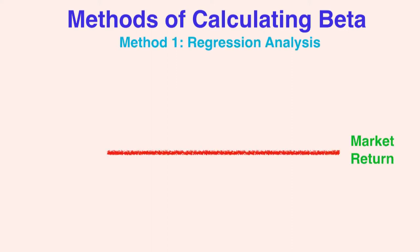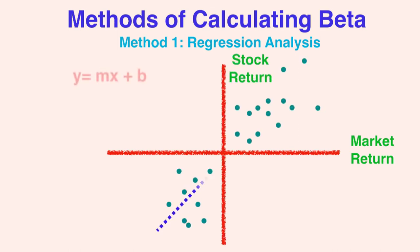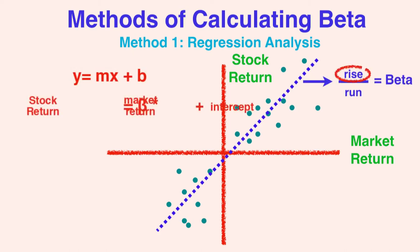There are two ways of calculating the beta of a stock, and both will give you the same result. One method is to perform a regression analysis. By plotting the market return on the x-axis and the stock return on the y-axis, you can find the slope of the line of best fit, which is the beta of the stock. In this sense, the beta, or the slope, is telling us how much the stock's return will change for a given change in market returns. In other words, beta tells us how much the stock's return moves relative to the market, or how risky the stock is relative to the market.